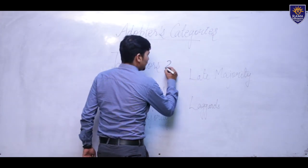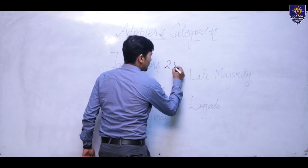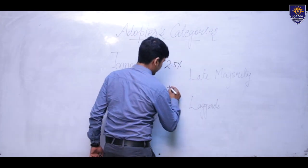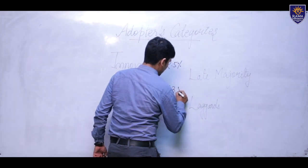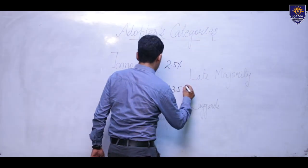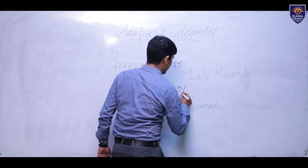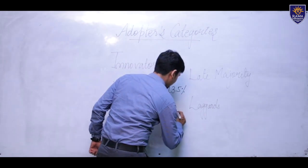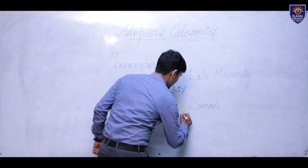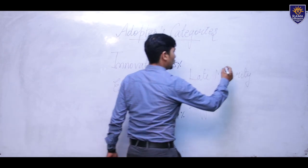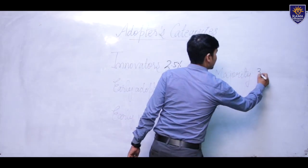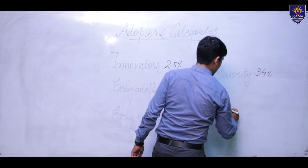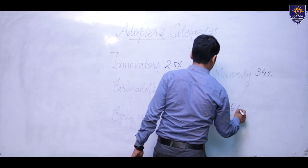In terms of percentages, innovators make up 2.5%, early adopters are 13.5%, early majority and late majority are each 34%, and the laggards are 16% of the population.